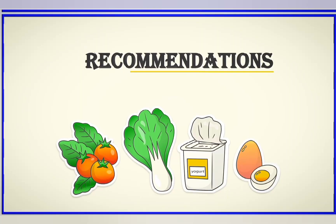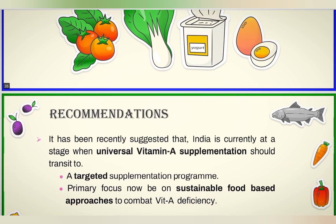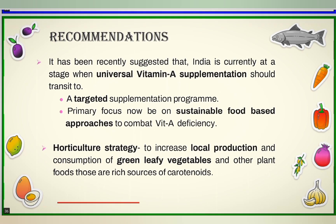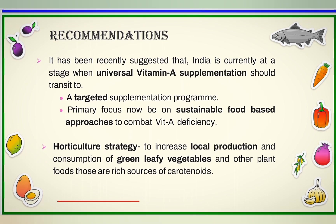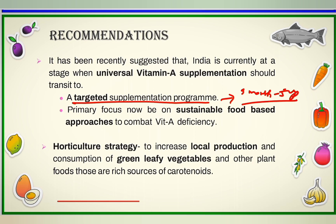Based on the present scenario of vitamin A deficiency, it has been recently suggested that India is at a stage where universal vitamin A supplementation should transition to a targeted supplementation program, which is already being followed. The targeted age group is 9 months to 5 years, and the primary focus should be on sustainable food-based approaches using food sources rich in vitamin A.